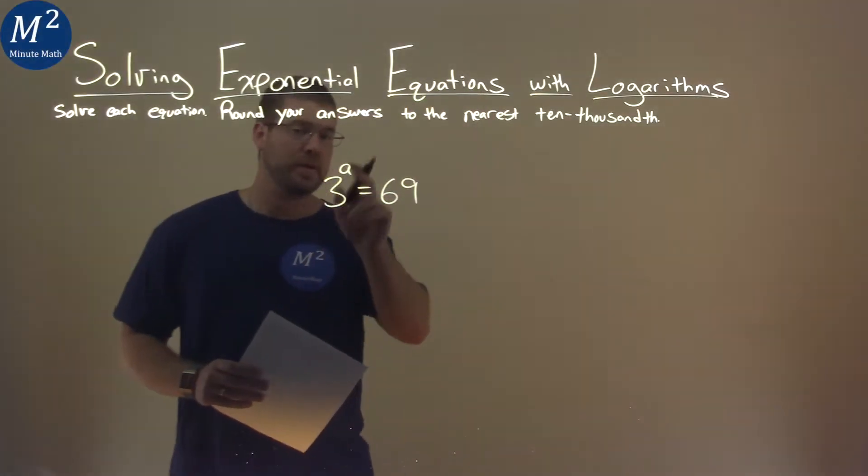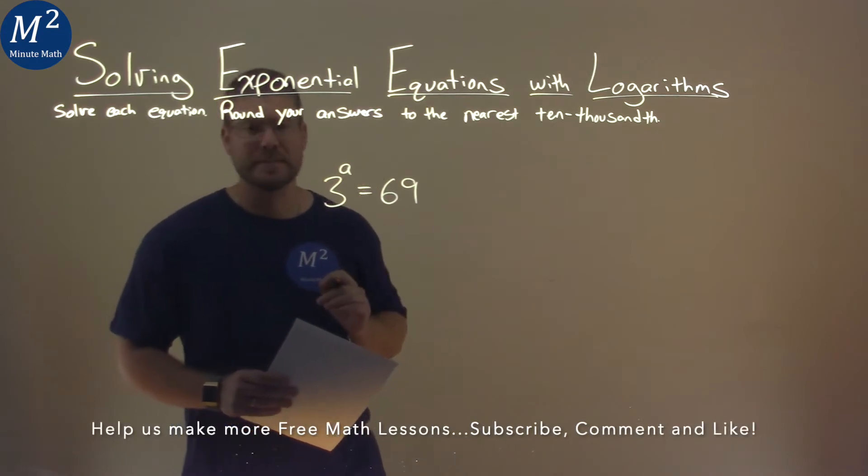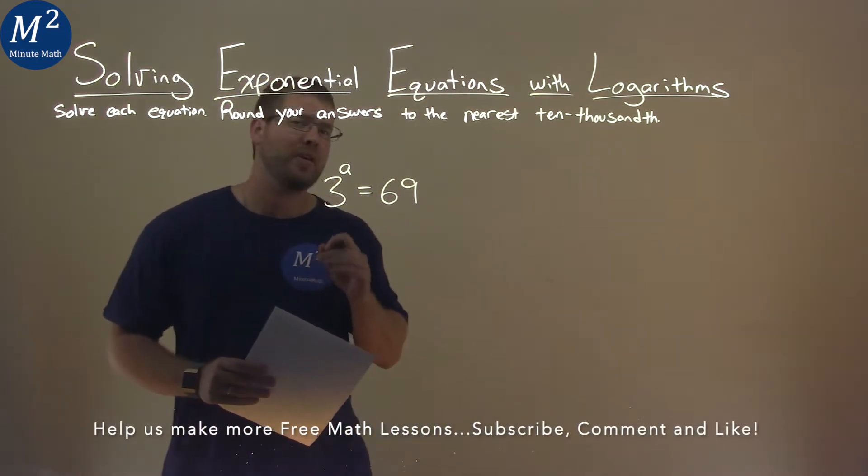I'm given this problem right here: 3 to the power of a is equal to 69, and we need to solve this equation.